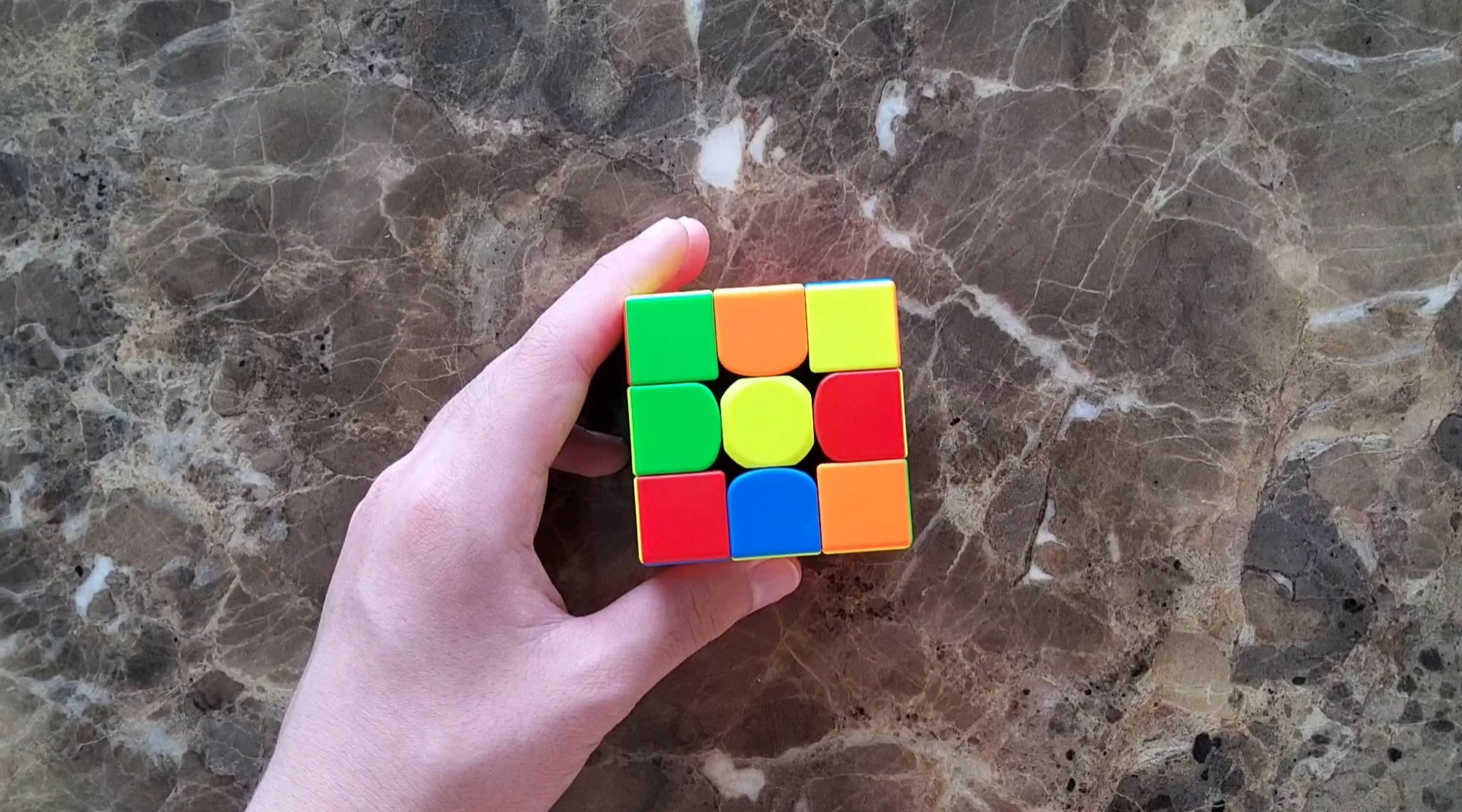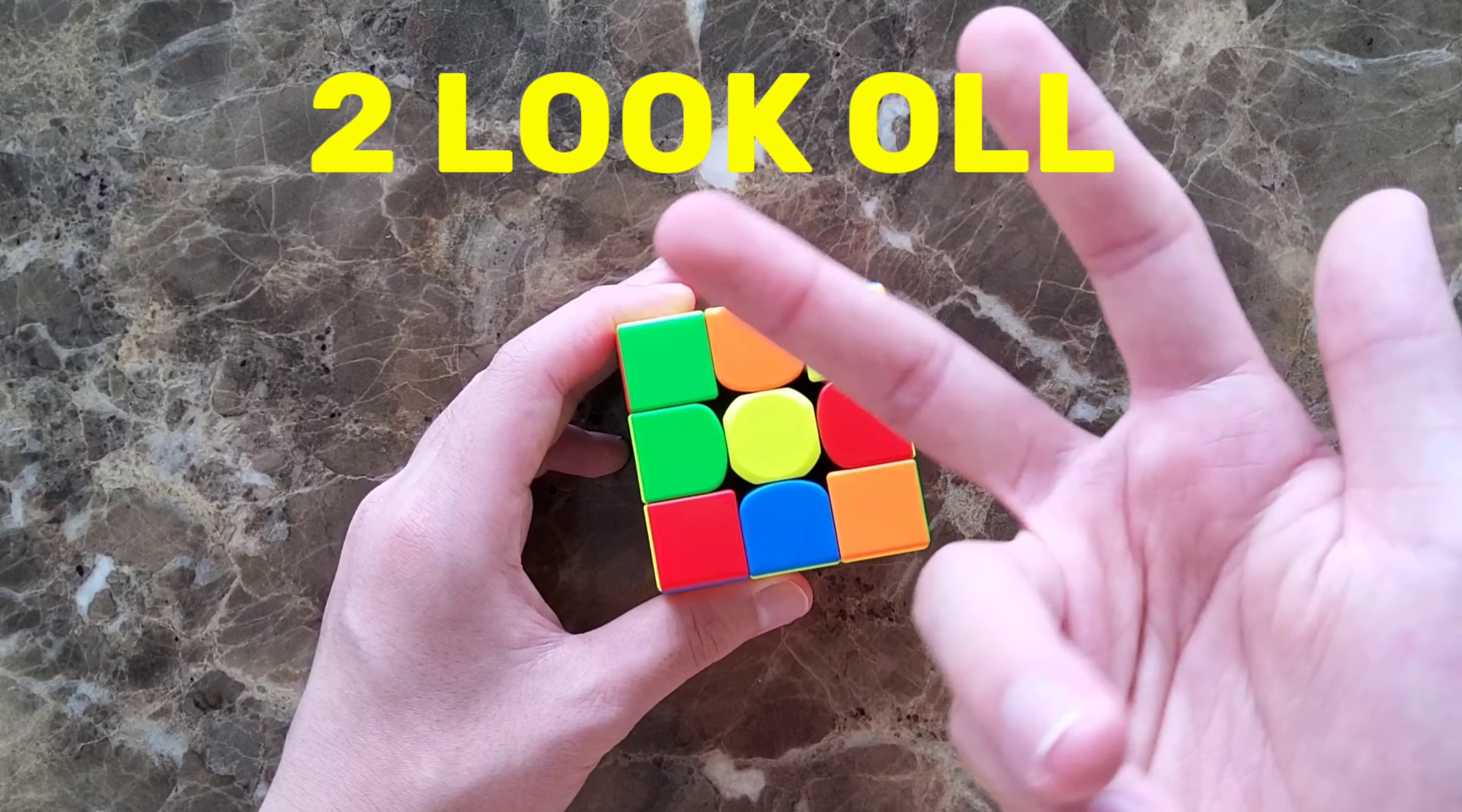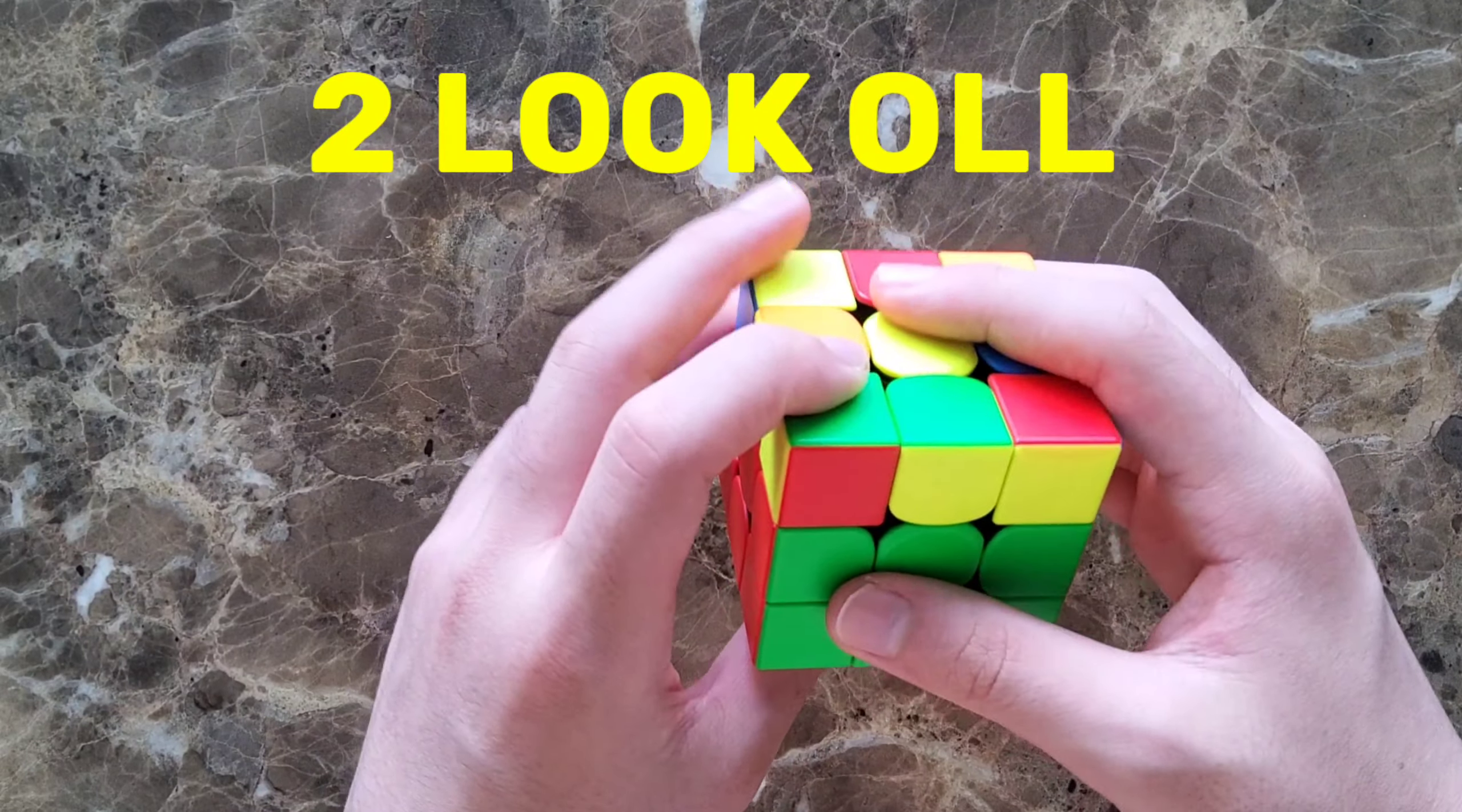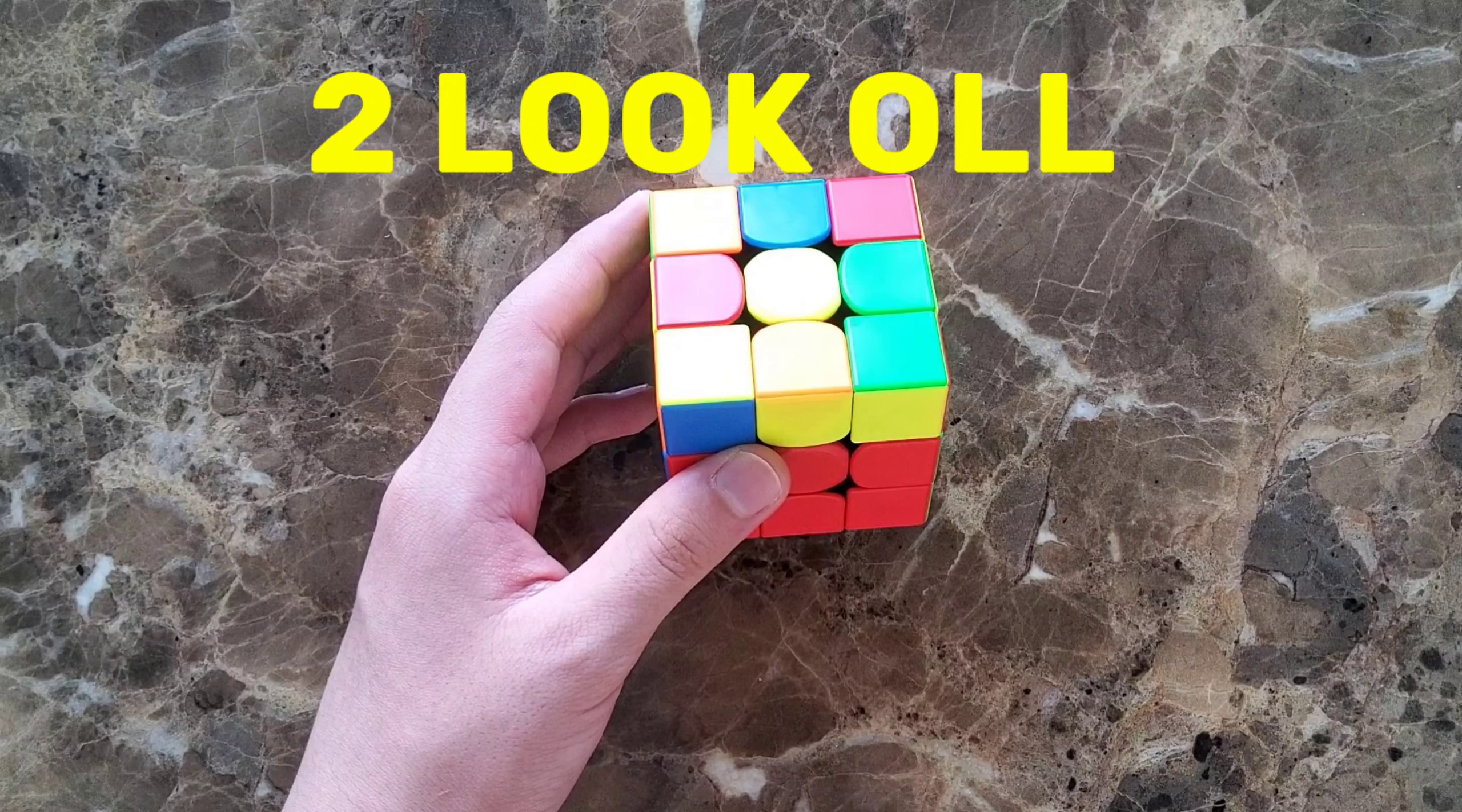After solving F2L, I used 2-look OLL to finish the yellow face. 2-look OLL is making a yellow cross, and there are 3 different cases to make a cross. After making the cross, you use 7 different algorithms to solve the yellow face.